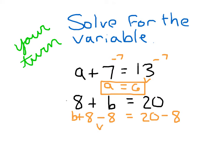And so I have 20 minus 8. B plus 8 minus 8. 8 minus 8 is 0, so that's B plus 0, which just leaves us with B. And B equaling 20 minus 8, which is 12.